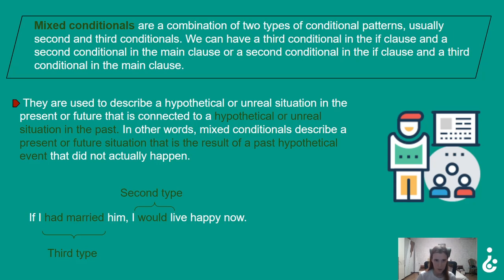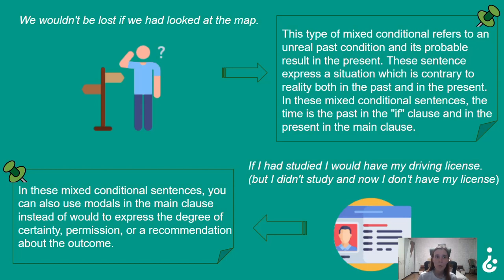Let's look at one example. 'If I had married him' — had married, third type — 'I would live happy now' — would live, second type. 'We wouldn't be lost if we had looked at the map.' This type of mixed conditional refers to an unreal past condition and its probable result in the present. This sentence expresses a situation which is contrary to reality, both in the past and in the present.